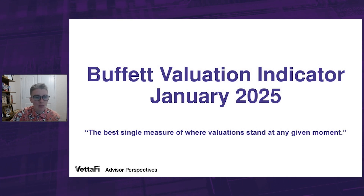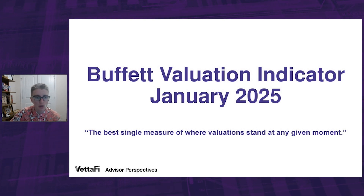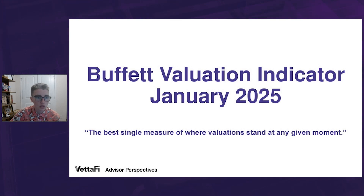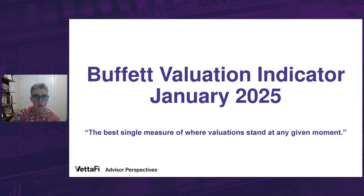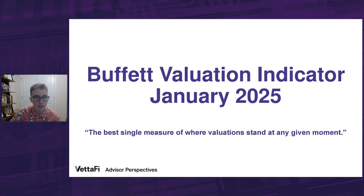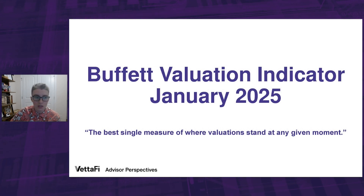Today, we're updating the Buffett Valuation Indicator, made popular by Warren Buffett, who called it probably the best single measure of market valuation. It evaluates stock market valuation relative to the economy by dividing the total value of all publicly traded stocks by GDP. A high ratio suggests the stock market is growing much faster than the economy, potentially signaling a bubble.